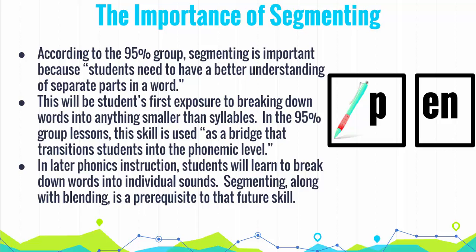Segmenting is also a crucial skill for kindergarten students. It is important to note a distinction between segmenting onset and rhyme and segmenting sound. This standard is focused on segmenting onset and rhyme, which is to break down a word into two parts, as opposed to breaking it down into each phoneme or sound. This will be the first exposure that most students have to breaking down words into anything smaller than syllables, and will serve as a bridge that transitions students into the phonemic level.